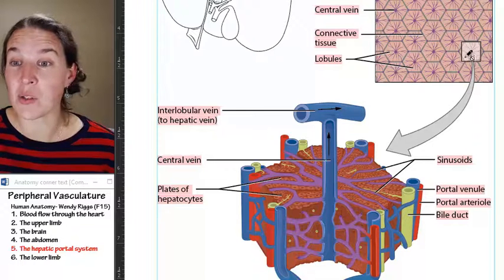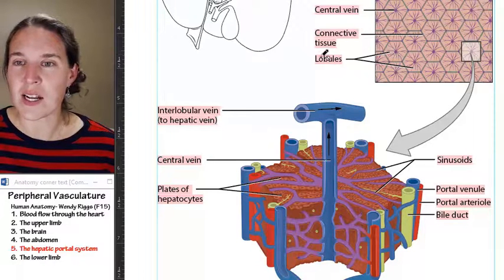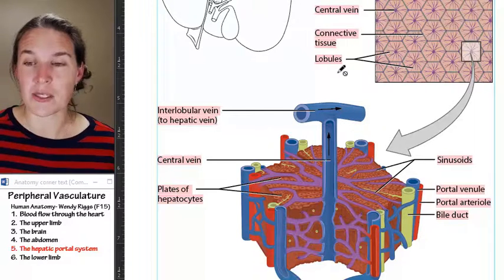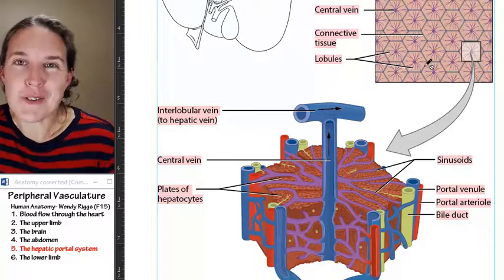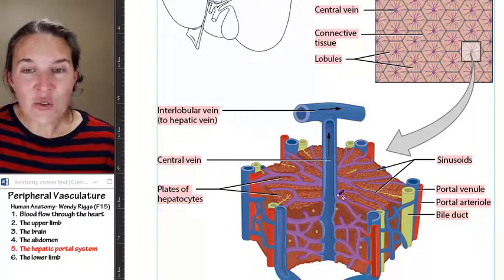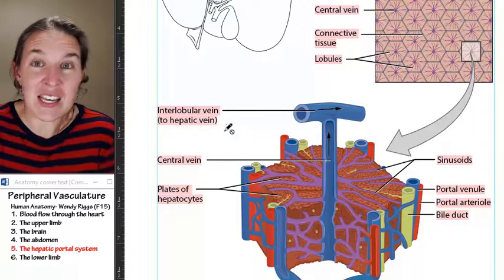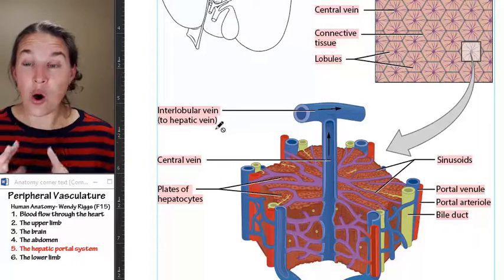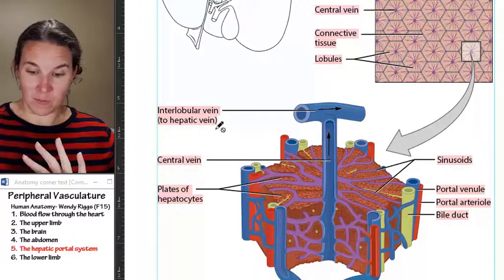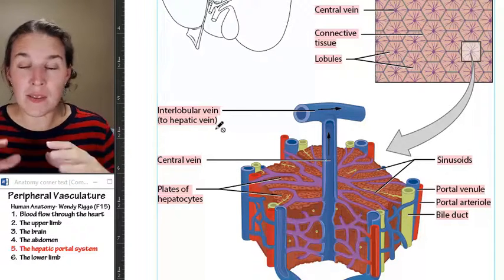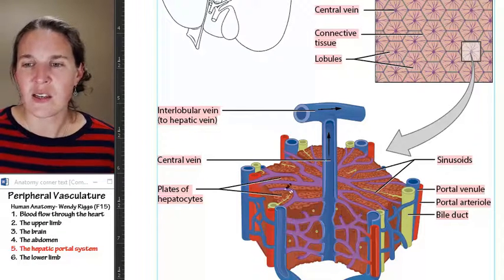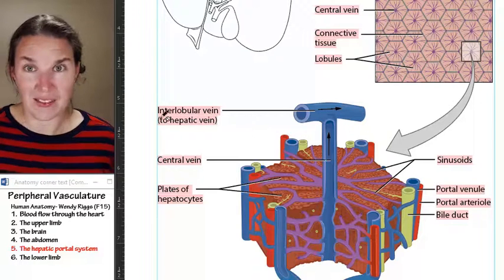How many hepatic lobules do we have? One, two, three, four—lots of lobules. Each lobule has a central vein down the middle. The central vein connects to the hepatic vein, so all these lobules are draining blood. Blood has to travel through all these lobules in order to reach the hepatic vein.